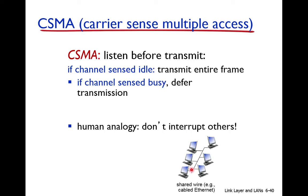But when this node transmits, it still listens to the medium. Why? Because it is possible that this node senses the medium as free, and at the same time another node also senses the medium as free. So both nodes sense the medium as free and both start transmission at the same time. When their signals arrive at the same point, they collide. This is called a collision. So when the node senses the medium as free, it transmits the entire frame, but still listens to the medium to check whether its signal has collided.